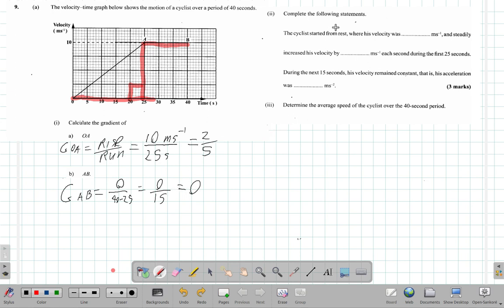Part two: complete the following statements. The cyclist started from rest where his velocity was zero meters per second, and steadily increased his velocity by 2/5 meters per second each second during the first 25 seconds.